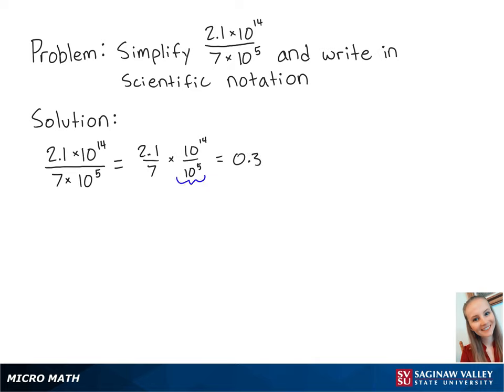we know that 10 to the 14th over 10 to the 5th equals 10 to the 14 minus 5, which equals 10 to the 9th.